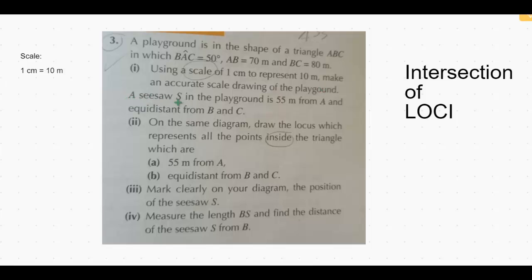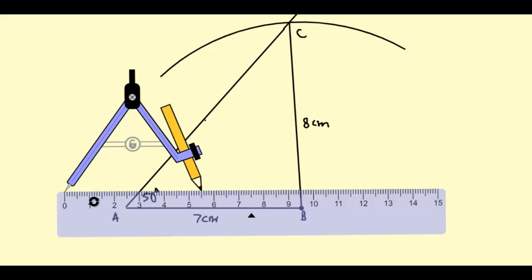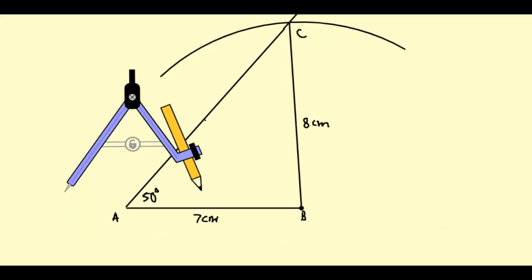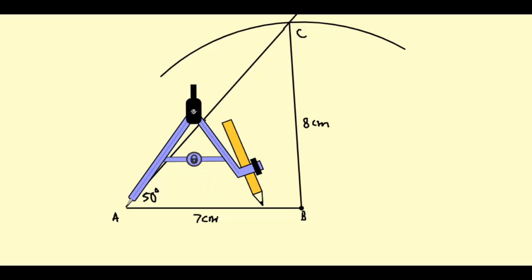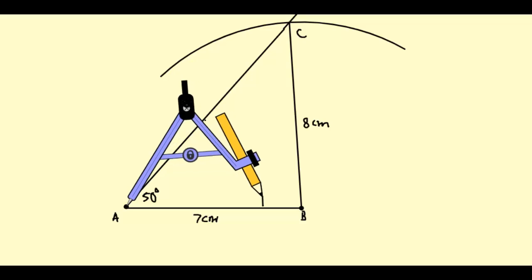A seesaw S in the playground is 55 meters from A and equidistant from points B and C. According to scale, 55 meters will be 5.5 centimeters. So seesaw S will be 5.5 centimeters from point A. A fixed distance from one point forms a circle, so we will draw a circle at A whose radius will be 5.5 centimeters, opening the compass to 5.5 centimeters with center at A.